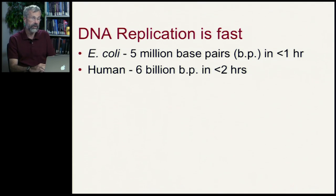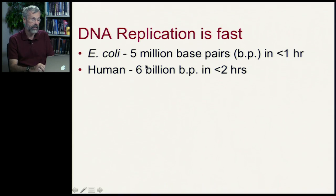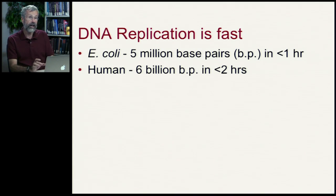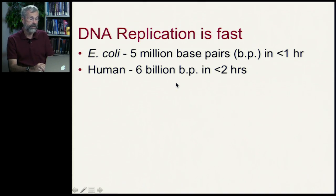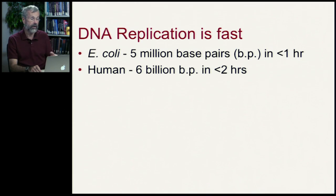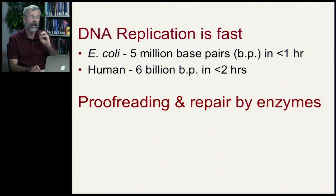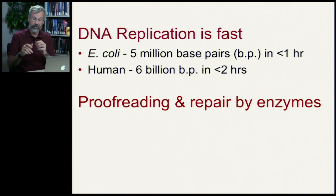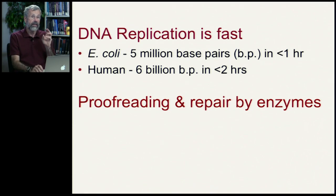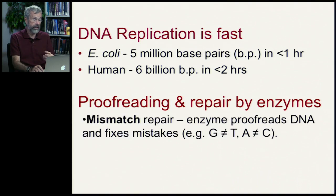This replication process happens very quickly within our cells. Escherichia coli, a bacterium that lives in our guts, has an entire genome of five million base pairs, and the whole thing can be replicated in less than an hour. Our genome consists of six billion base pairs, and this can be completely copied and replicated within two hours. Not only do enzymes bring in the right nucleotides, they also proofread and repair any mistakes in the resultant DNA molecules.